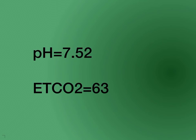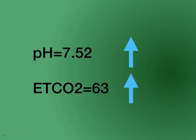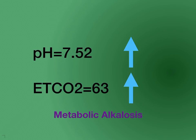pH is up and the end-tidal CO2 is 63, which is also up. They're both moving in an equal direction, so that's metabolic equal. And the pH indicates alkalosis, so this is metabolic alkalosis.